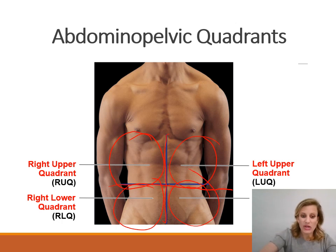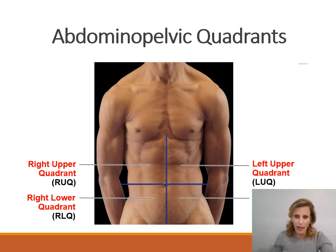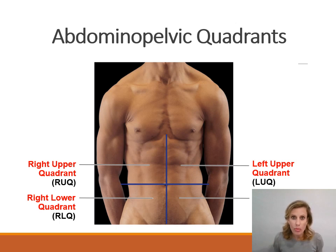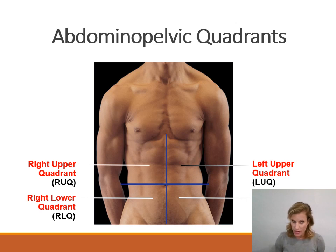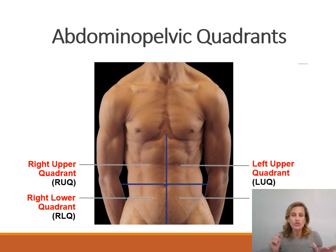We use these really frequently, like when charting. If you're working in the emergency room and a patient comes in with abdominal pain, in order to note where that pain is in the chart, you could use the quadrants. Also, when you read up on different disease states, for appendicitis, for example, it will say lower right quadrant pain. That tells you the general area where the pain will typically be. These are so much easier to use than trying to describe a location in a different way.